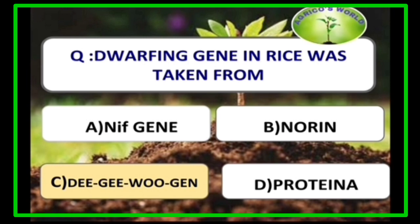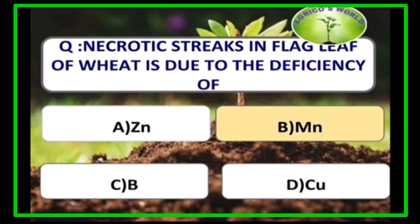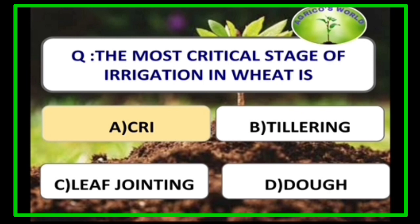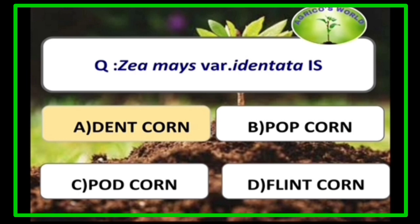The dwarfing gene in rice is taken from Dee-geo-woo-gen, and the dwarfing gene in wheat is taken from Norin 10. Necrotic streaks in the flag leaf of wheat are due to deficiency of manganese. The most critical stage of irrigation in wheat is crown root initiation, which occurs at 21 days after sowing.